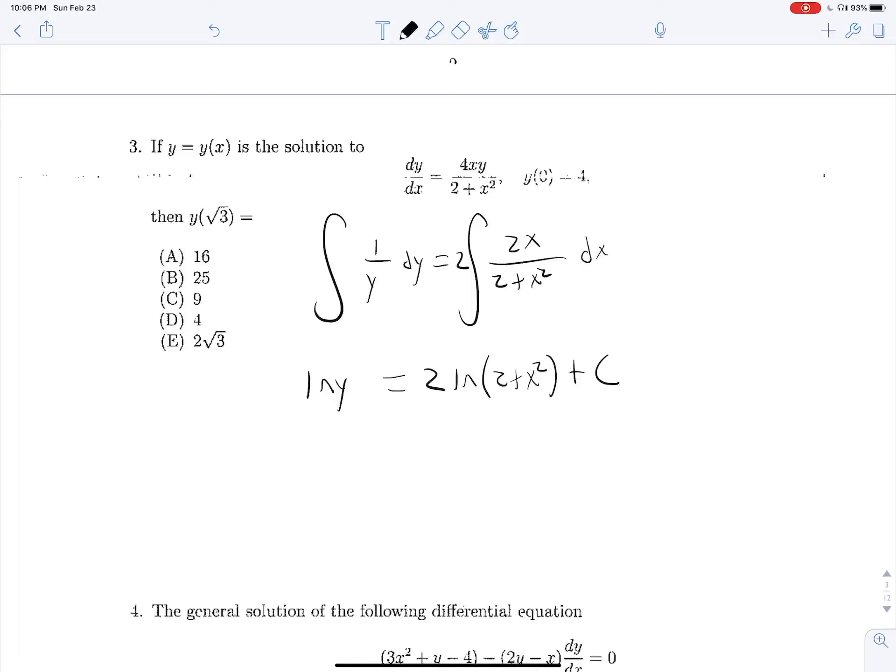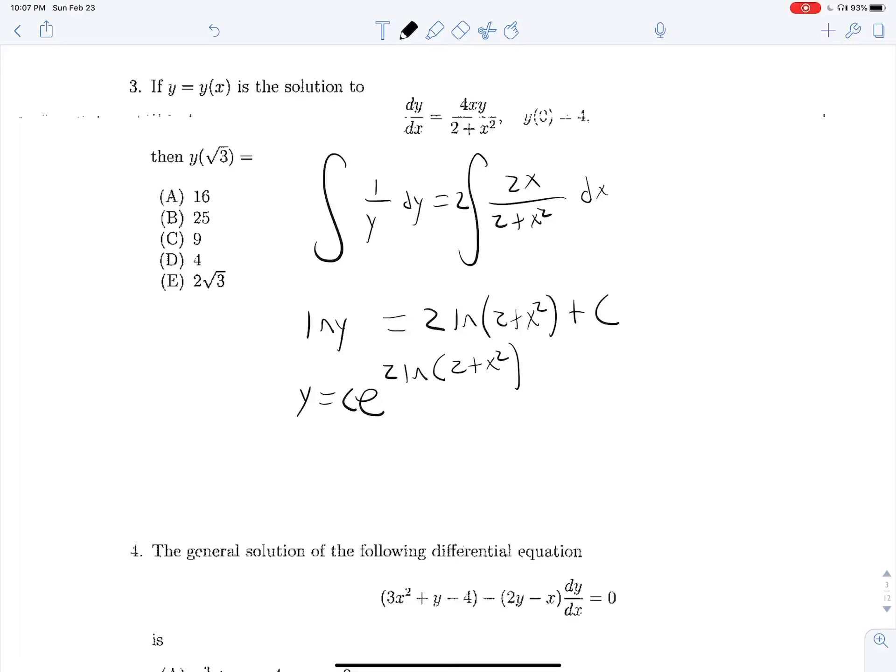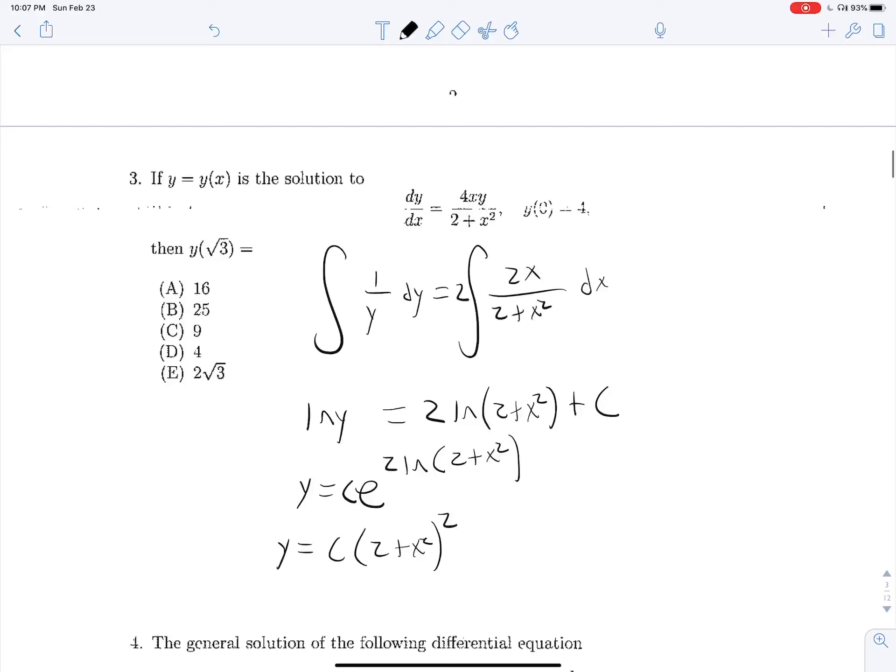Okay, so this will become, if we do e to each side to get rid of this ln, exponentiate both, we'll get y equals e to the 2 ln 2 plus x squared, and then that plus c will just come out as a constant there. Okay, finally, this simplified some more, is y equals c times 2 plus x squared raised to the second power.